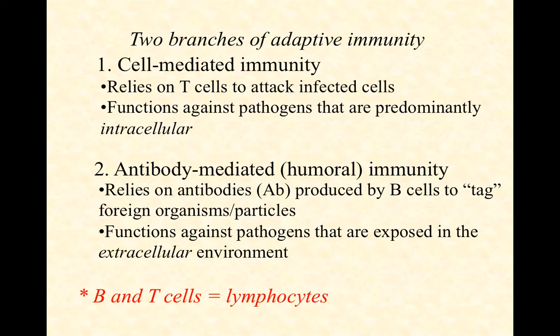We tend to divide the adaptive immune response into two different categories, two different features that are often working together. The first is what we call cell-mediated immunity, and this relies on our cytotoxic T cells. We also have helper T cells that are involved in both cell-mediated and antibody-mediated immunity, but the cytotoxic T cells are there to go after intracellular pathogens — pathogens that are growing and dividing inside host cells, and therefore hidden from the rest of our immune system. Cell-mediated immunity is all about those cytotoxic T cells going after them.